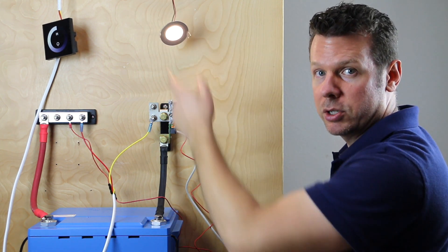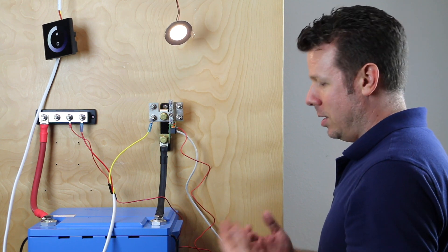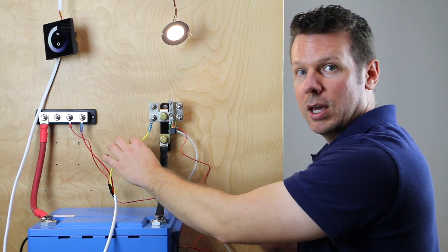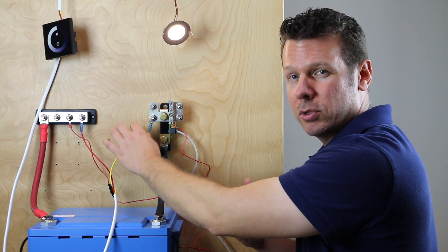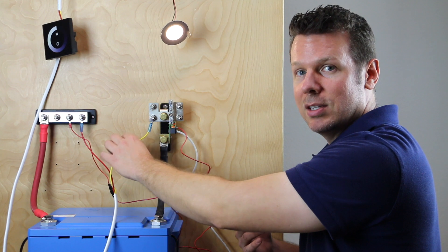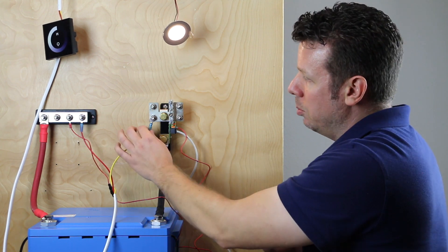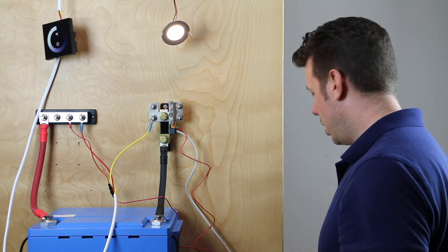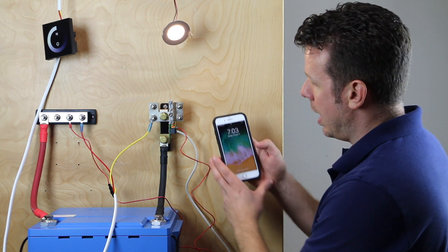You can see I've tied in red as our positive. This is a marine safety duplex cable so the negative is yellow instead of black but that's why I've tied the yellow in here on our negative bus and we've got a load. Let's take a look at the app.